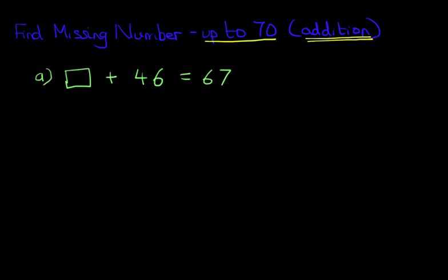Now one method is we're going to take the 46 and move it across to the right hand side. Now because we're adding here, when we move it to the other side, we will be subtracting. So this question will then look like this: something equals 67 minus 46. So we have taken the 46 to the other side of the equal sign.